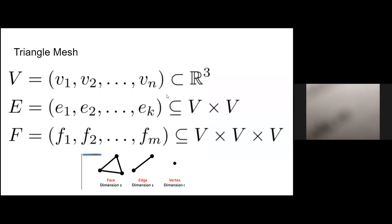Formally, a triangle mesh can be defined by vertices, edges, and faces. Vertices are a bunch of points in 3D space, edges are the links between them, and faces are the triangles formed by three adjacent vertices or three adjacent edges. This definition looks very similar to the definition for graphs — a triangle mesh is just a special kind of graph.